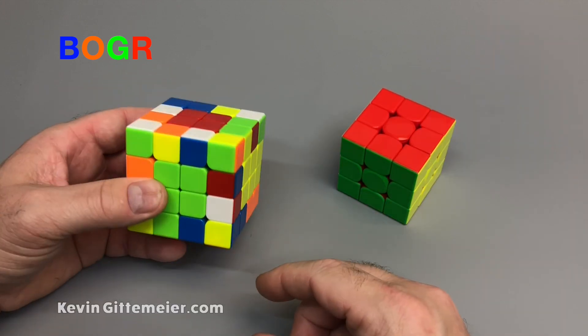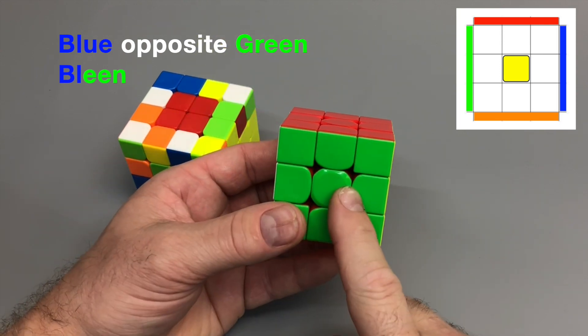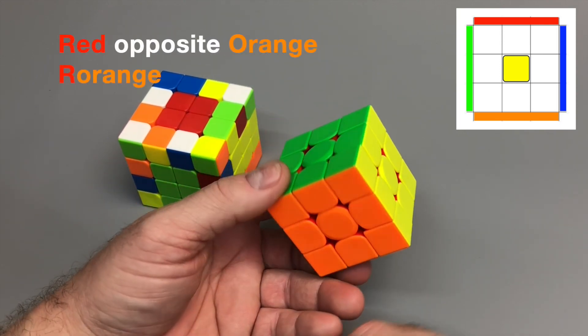You, however, may end with two different colors. Just make sure they are correct relatively with blue opposite green, and red opposite orange.